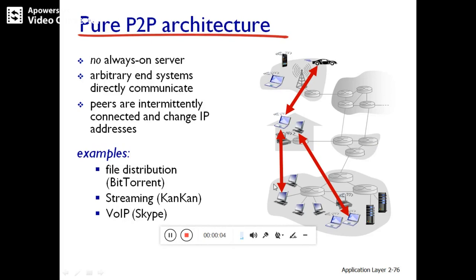Hello students, welcome back. This is Vasan Naik from Canada Engineering College. In this session we will study pure peer-to-peer architecture in networking. We know there are two types of architecture: client-server architecture and peer-to-peer architecture. Client-server depends on the server and infrastructure, but in peer-to-peer there is minimal reliance on always-on infrastructure servers. Instead, arbitrary end systems directly communicate and are called peers. These peers are intermittently connected and change IP addresses. Examples include file distribution using BitTorrent, streaming, and Voice over IP like Skype.